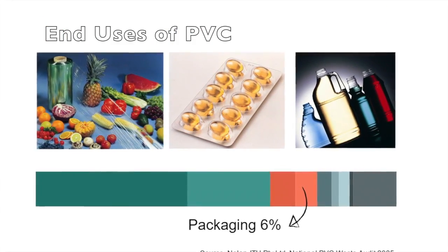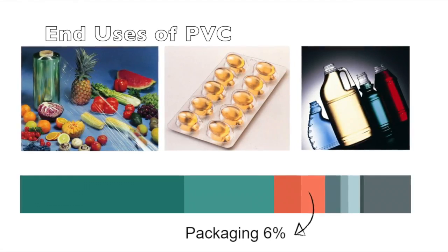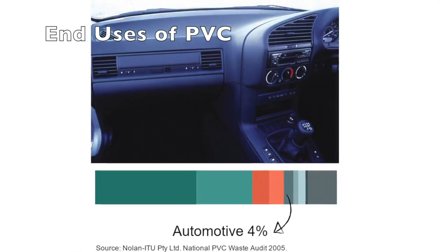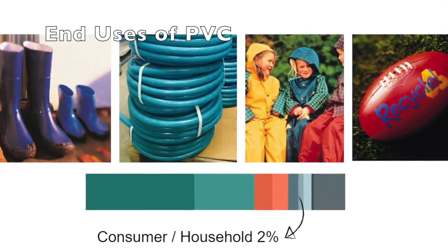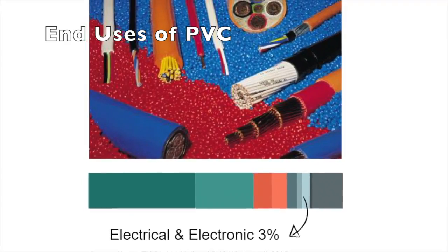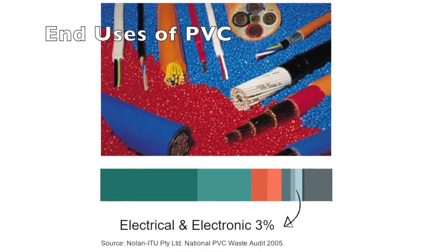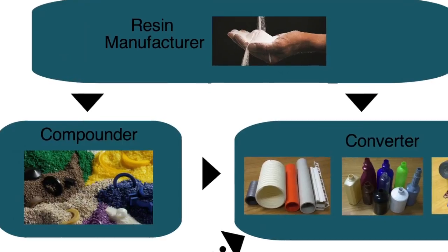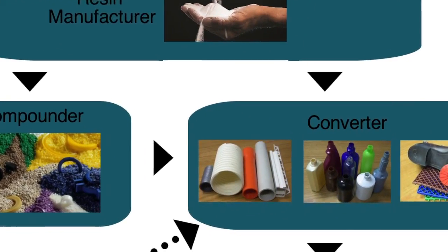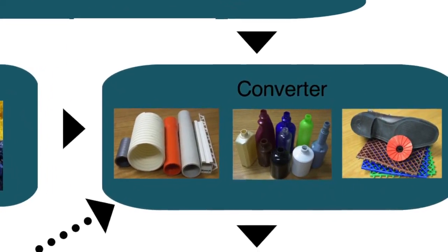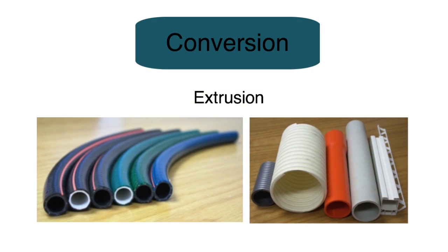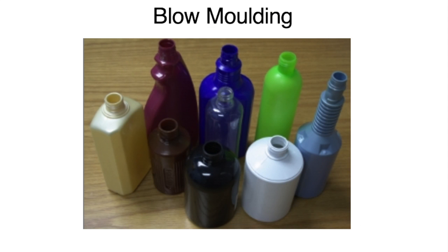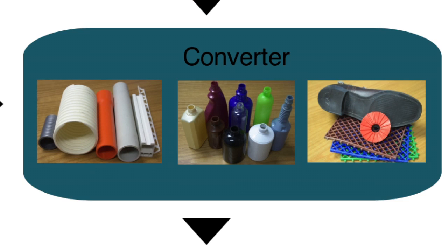PVC is used widely in products for construction because of its durability, but can also be used in medical devices, food contact packaging, toys, electrical products and clothing. Mixing PVC with these various additives is performed by a compounder. Some converters will do their own compounding with virgin resin to the specific formulation requirement of the end product. Converters process PVC compounds into final products, mostly by extrusion but also by calendaring, blow moulding, injection moulding or coating technologies.